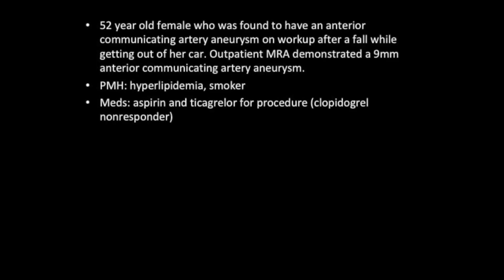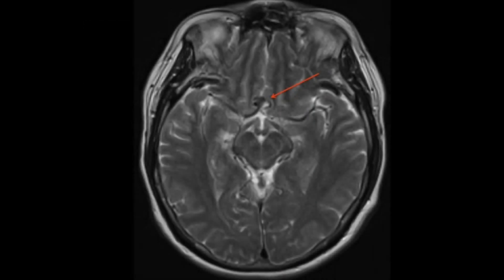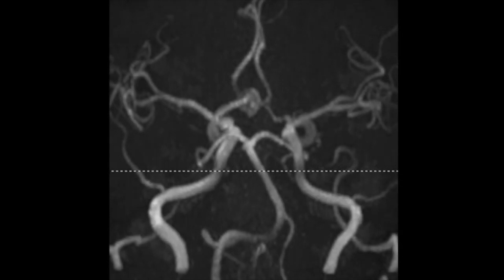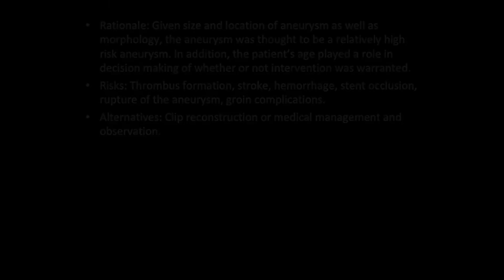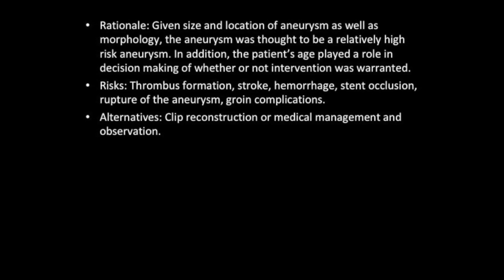We describe a 52-year-old female who was found to have an anterior communicating artery aneurysm on workup after a fall. As seen here on the T2 weighted axial image of the MRI and MRA, there is a broad-based 9mm anterior communicating artery aneurysm. Given the size, location, and morphology of this aneurysm, we thought it to be of high risk for rupture and necessitated treatment.